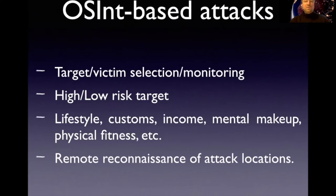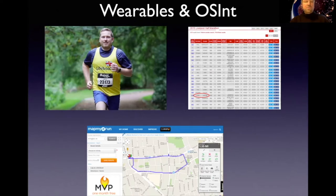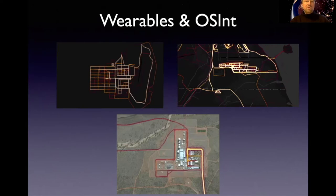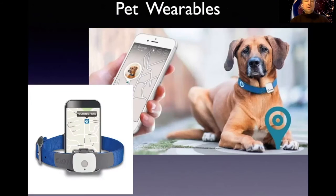One area to examine is open source intelligence-based attacks, where victim selection and monitoring is done online using various sources of information. One interesting new development is the abuse of wearable technology to profile victims. A notable recent case is the Strava data abuse, which was used to disclose the locations of American military bases abroad.